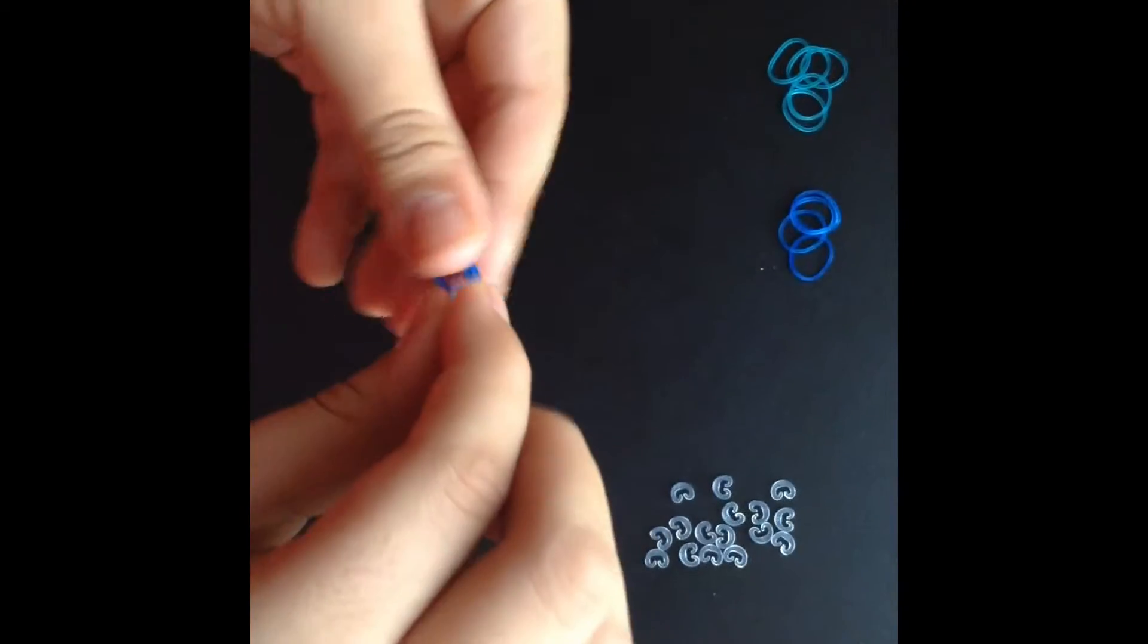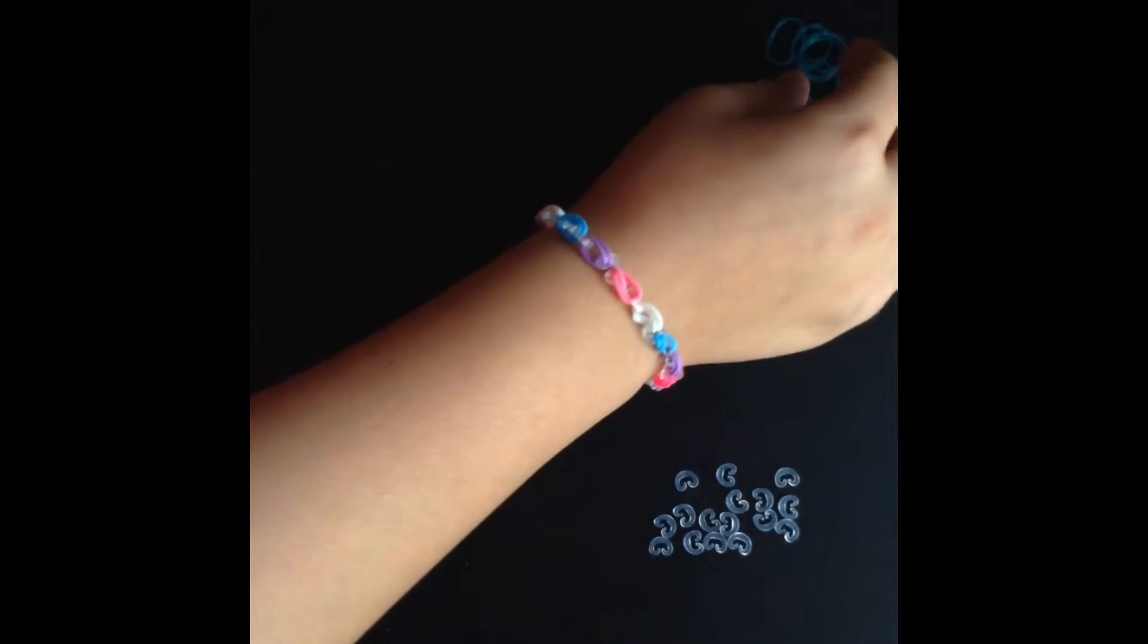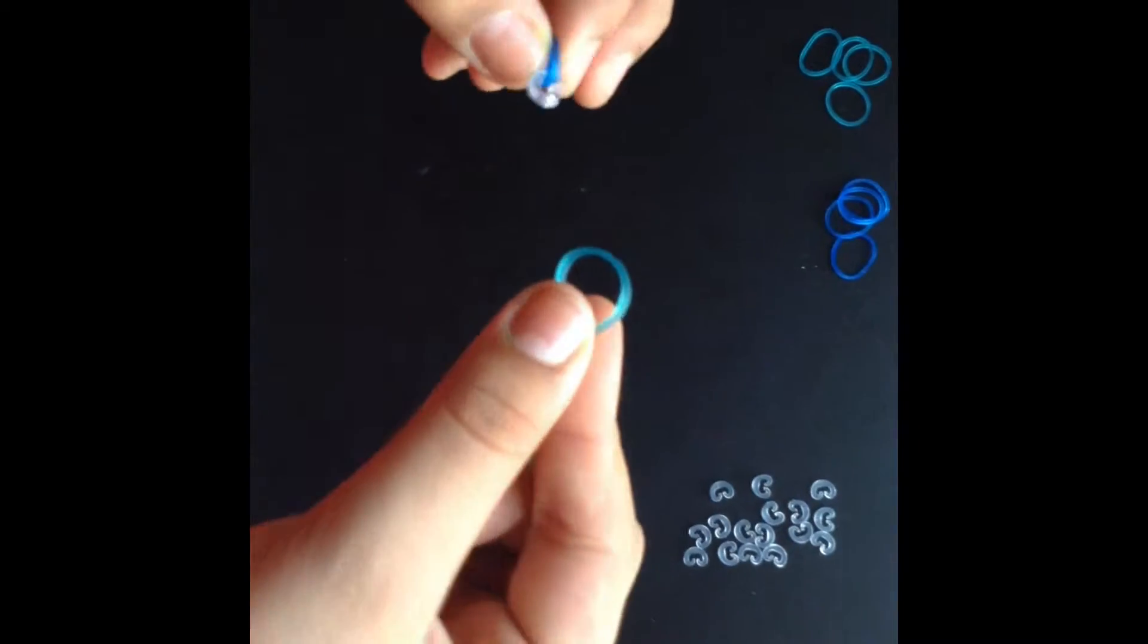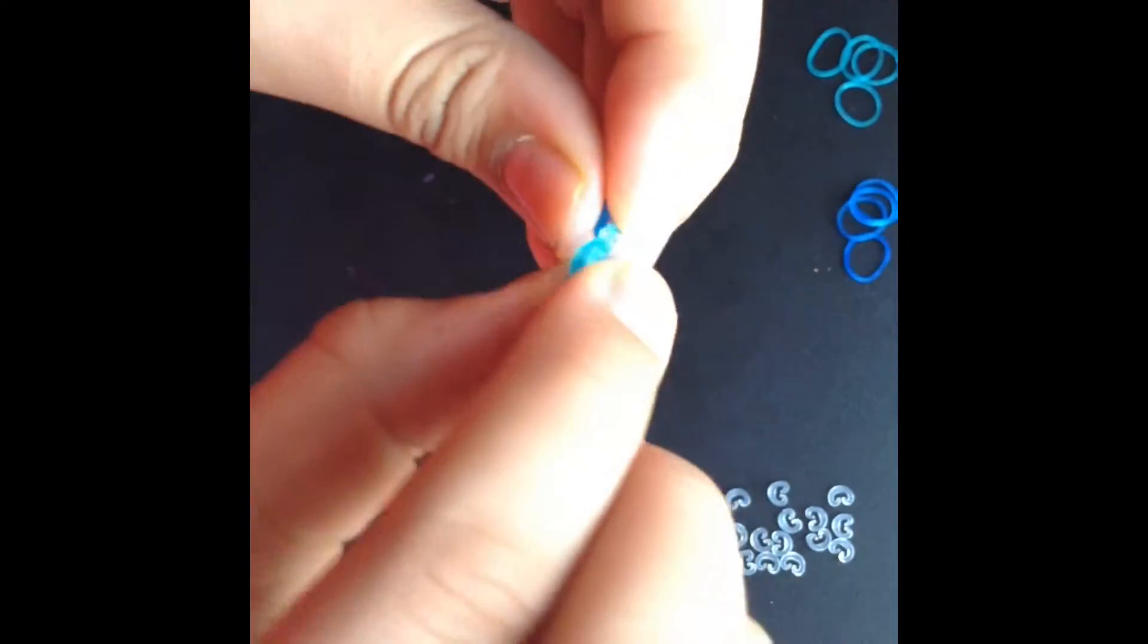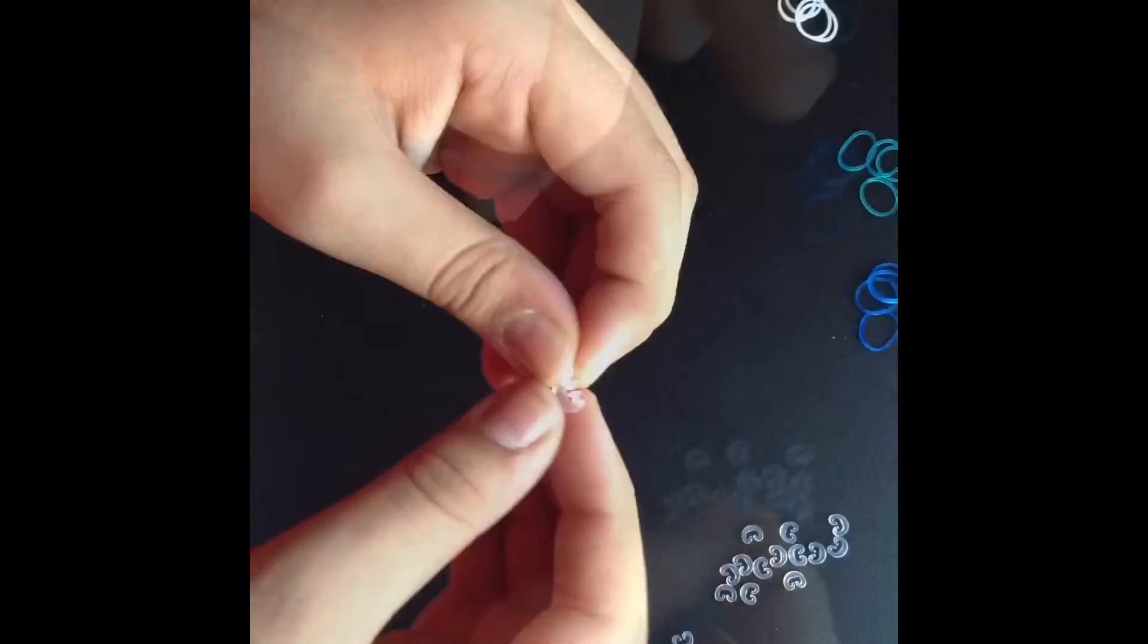And do the same thing to the other side using another color or the same color, just using a band. So here I'm just doing it again. And now just keep on doing this until you get a bracelet.